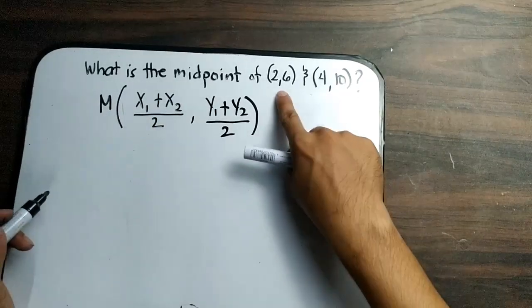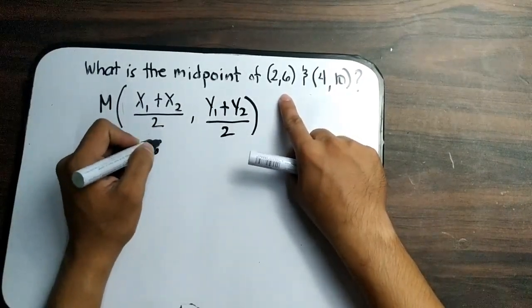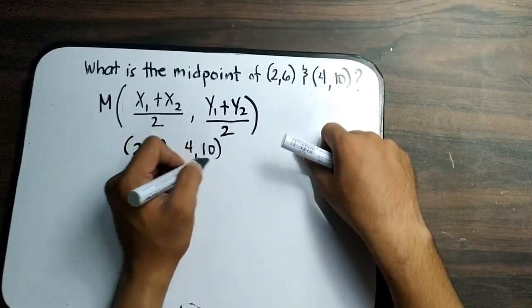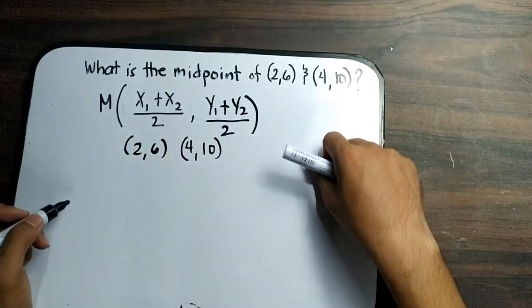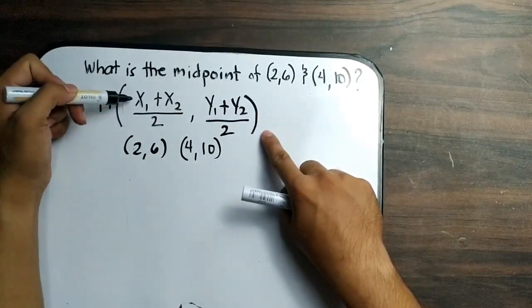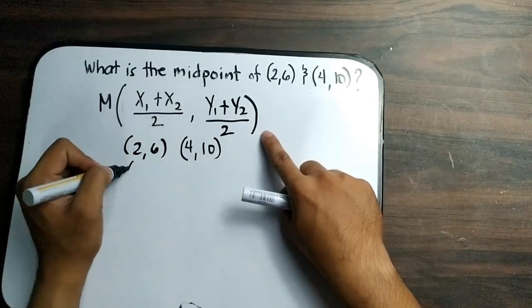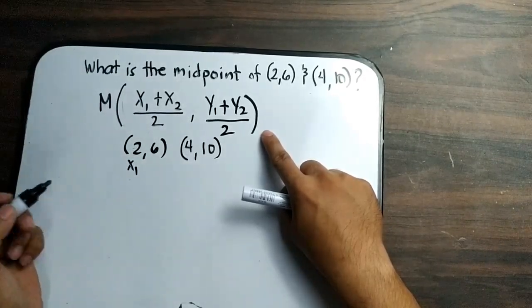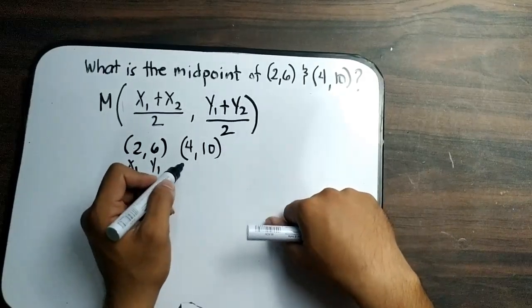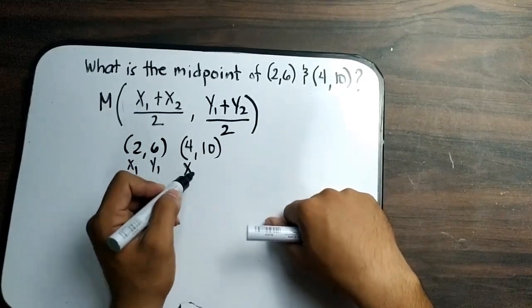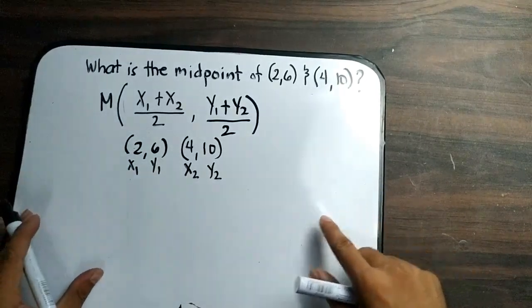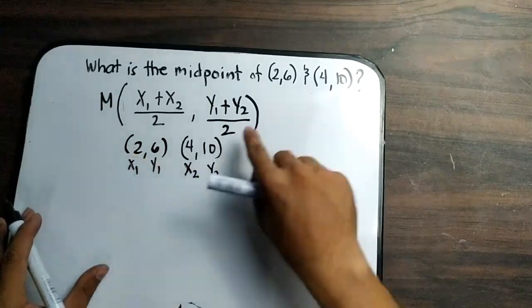So we have here in our problem (2,6) and (4,10). How to find the midpoint using this formula? First, you need to designate the variables. Your 2 will be designated as x sub 1, this is your y sub 1, this will be your x sub 2 and y sub 2. All you need to do is substitute these values to the formula.